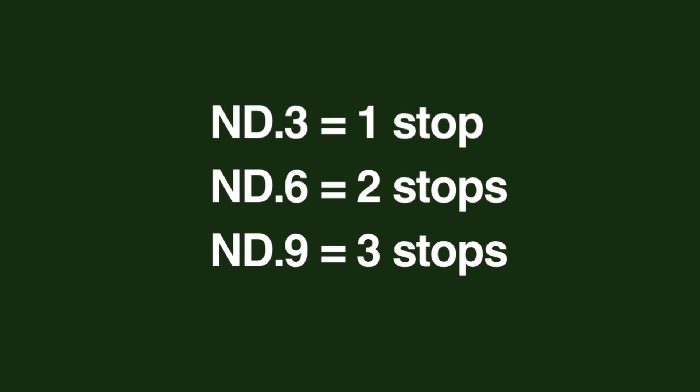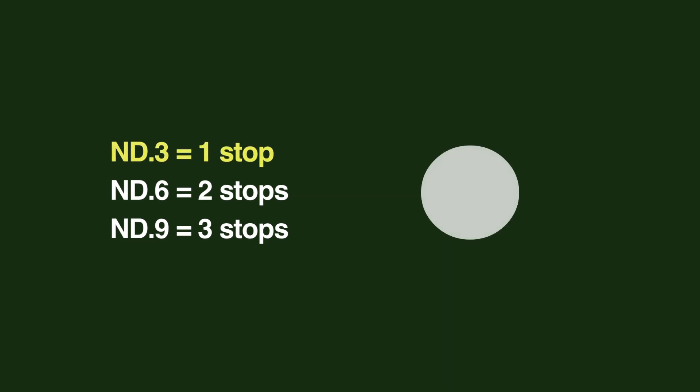ND filters come in 0.3 increments. Each 0.3 increment refers to one stop, and each stop cuts the light by one half. So if you use a 0.3 ND filter, you'll have cut the light in your frame by half. If you use a 0.6, you'll have cut the light by 75% — two stops.